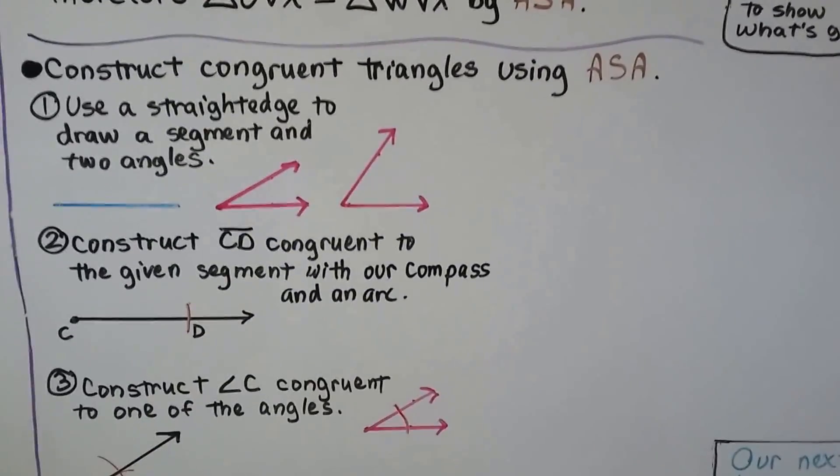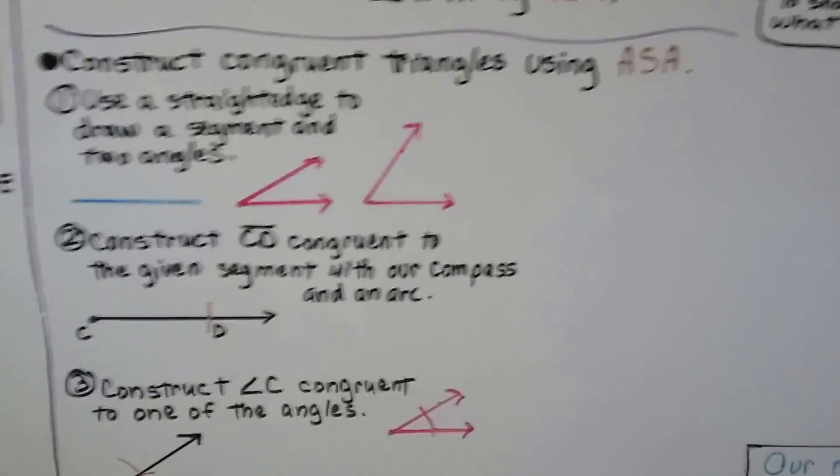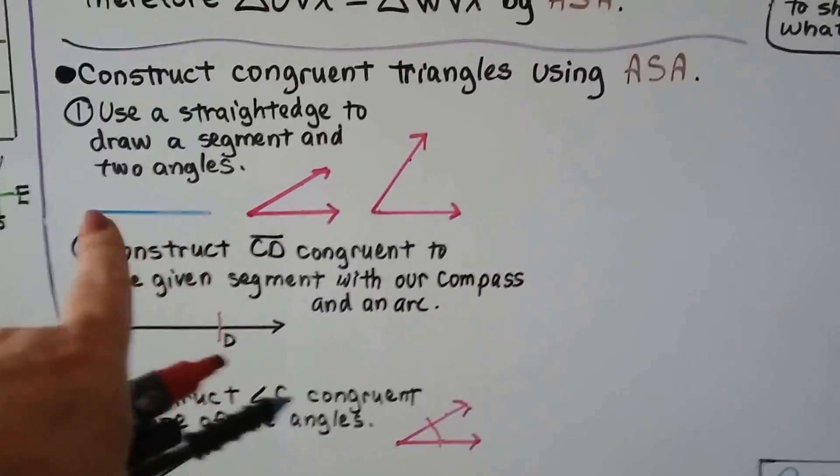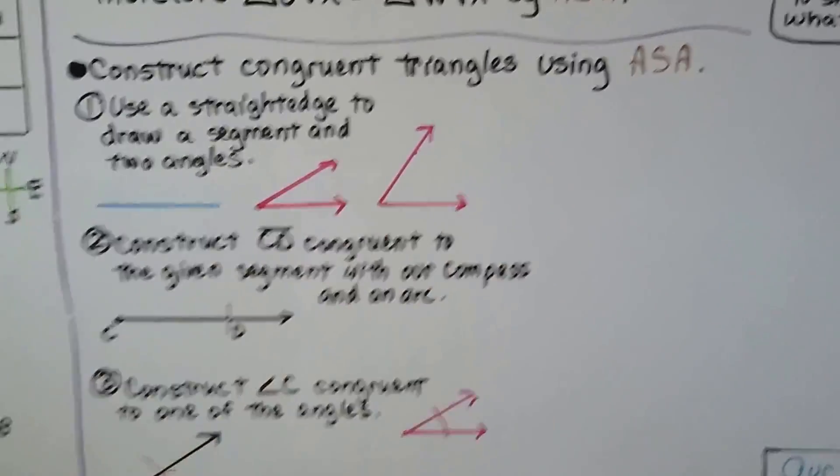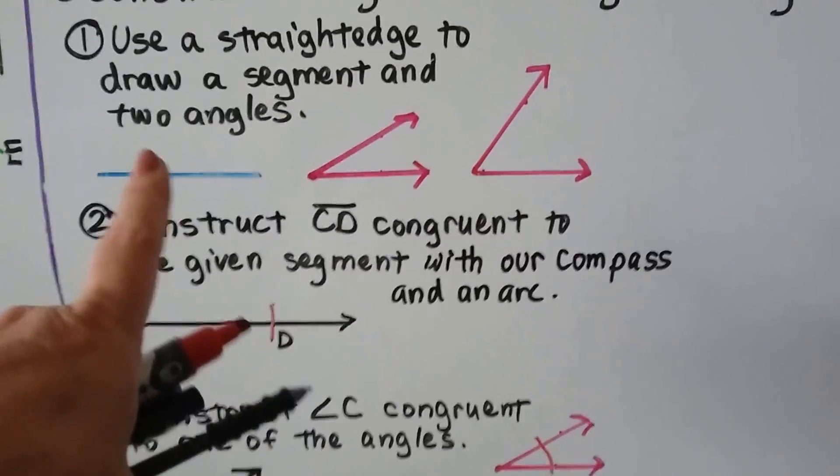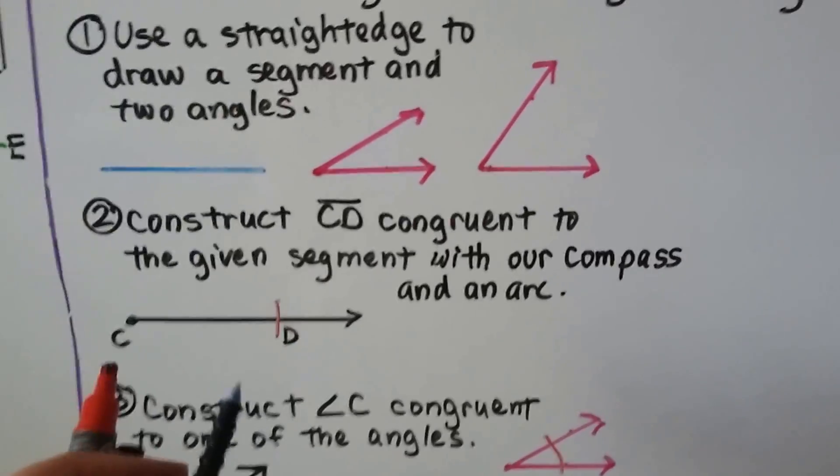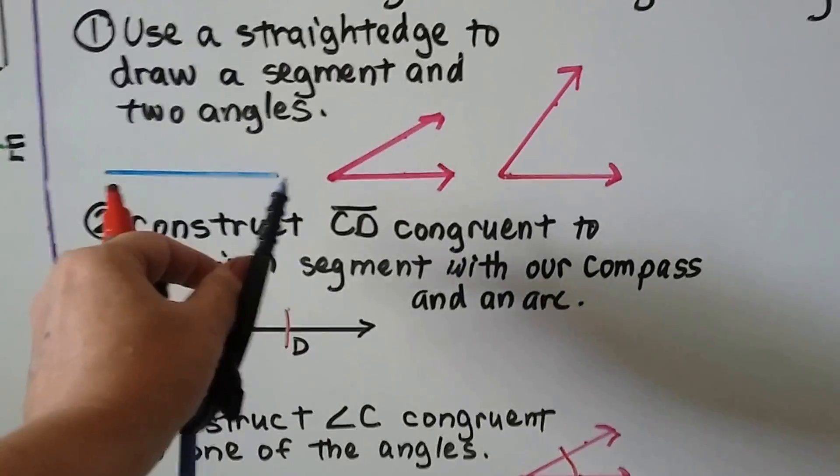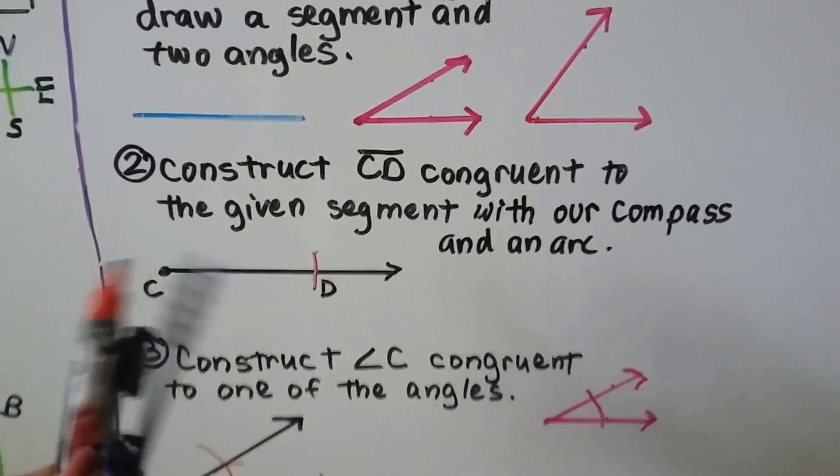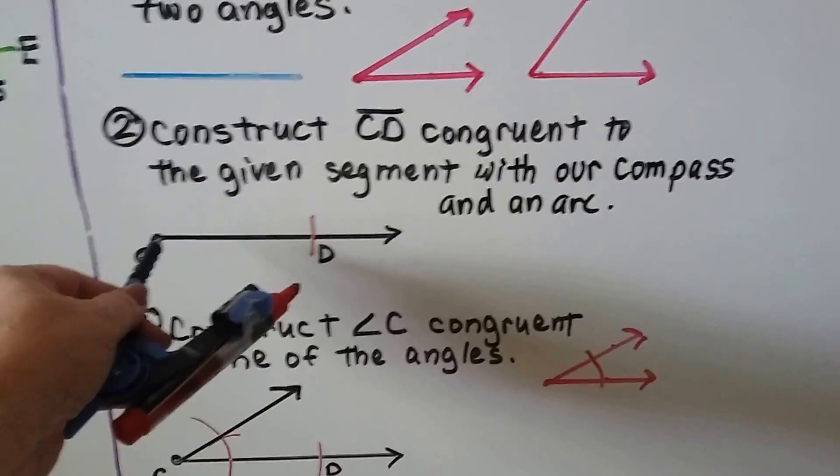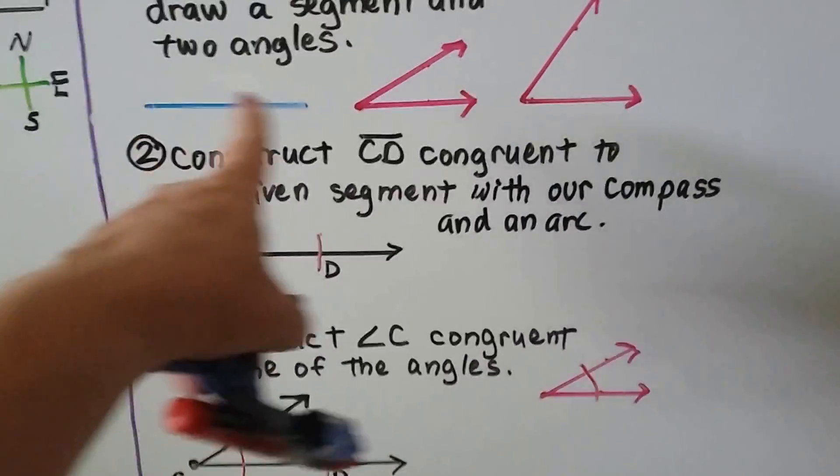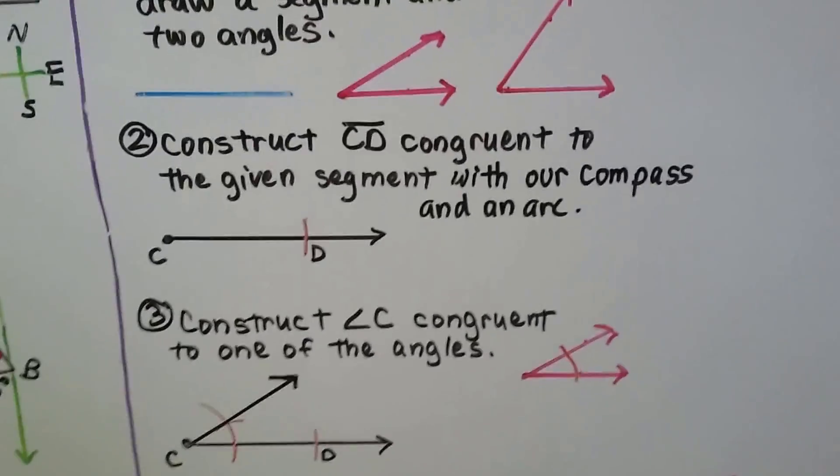Now we can construct congruent triangles by using ASA. We use a straight edge to draw a segment of any length we want and two different angle measures. We construct segment CD congruent to this given blue segment with our compass and an arc. I took the measure of this blue one and opened the compass up to that, then created point C here and made an arc. So now I know that's the length from C to D.